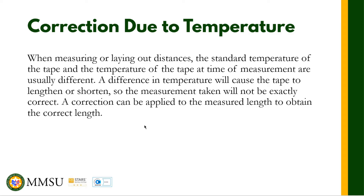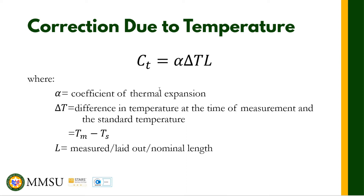The standardization of tape is usually at 20 degrees Celsius. Sometimes when it gets very hot, the tape elongates; but if the temperature is less than the standard temperature, the tape tends to contract. The formula for correction due to temperature is: C sub t is equal to alpha times delta T times the length.